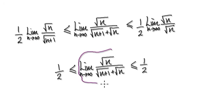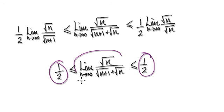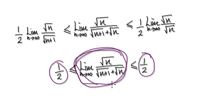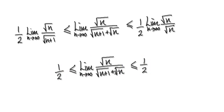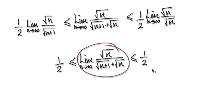So we don't know what this thing is, we don't know what the limit is, but we do know that it's trapped in between a half and a half. So this means as n tends to infinity, this will have no choice but to have a limit of a half. So the limit of this thing here is a half.